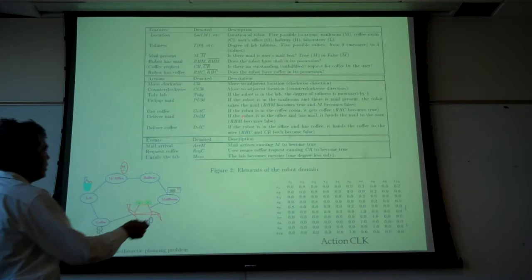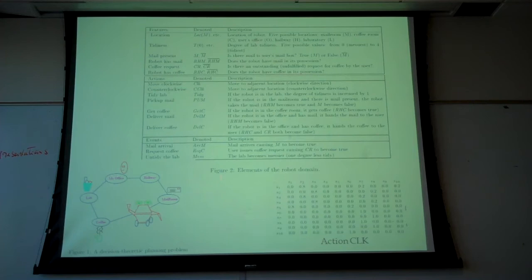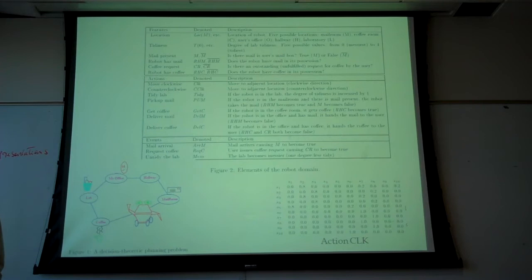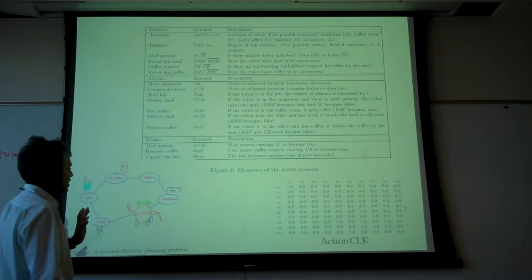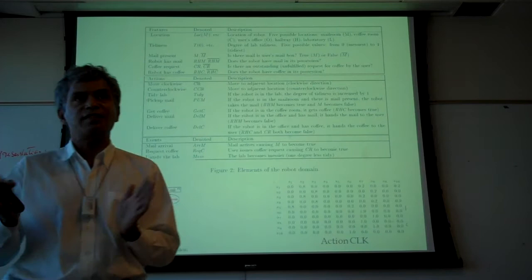A state in this world is a combination of values for all state variables. With five location values, five tidiness values, and binary values for mail present, robot has mail, coffee request, and robot has coffee, you get 5×5×2×2×2×2 = 400 states. You could describe actions as 400×400 state transition matrices, or alternatively in terms of how state variable values at time t determine values at time t+1.